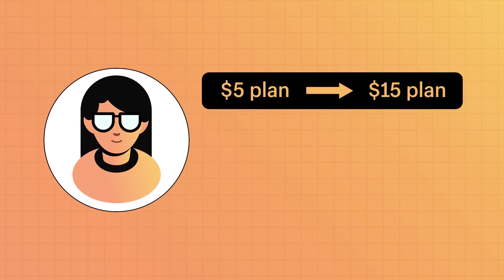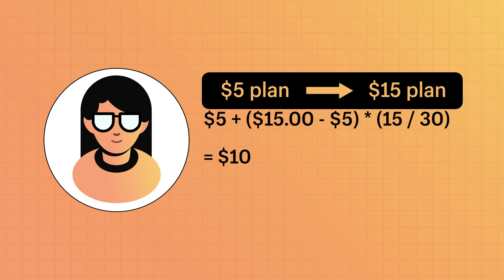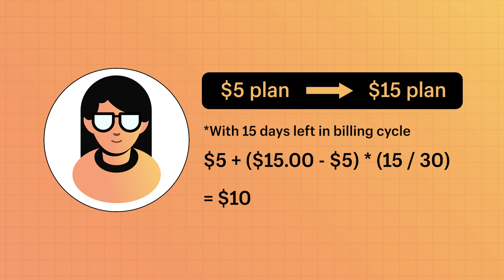What if Priya wants to upgrade her plan? In that case, the charge is prorated based on the price difference and the number of days remaining in the billing cycle. If she has 15 days left and decides to go from a $5 plan to a $15 plan, she'll be charged the old charge plus the difference between the new and old charge times the number of days remaining in the billing cycle divided by 30 — so in this case, $10 — and Priya won't have to pay the full $15.